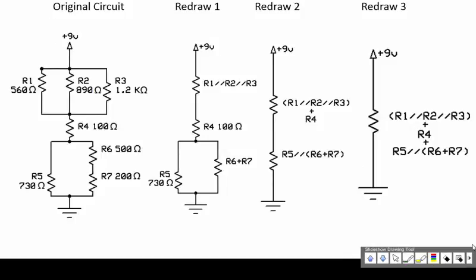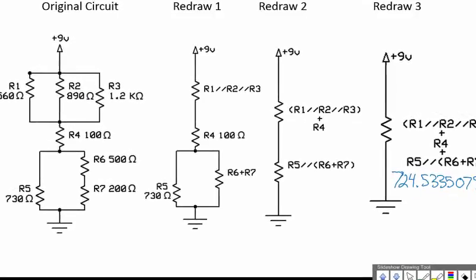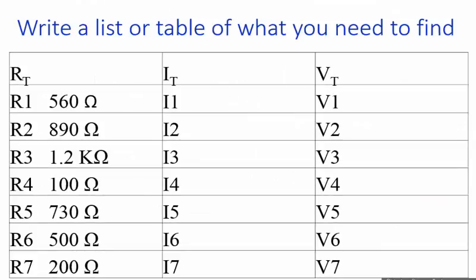And any circuit can be simplified to a single resistance. The Redraw 3 shows all of the calculations. I would need to put these two separate ones from Redraw 2 in series with each other. So I'll just add them together. For my total resistance, 724.5335079 ohms. Once I know my total resistance, the next step really is to write a list or a table of what you need to find. If I needed to find the total resistance by doing the series of redraws, I've just found that. So I'll list that in my table. And at this point, this is where I would round.